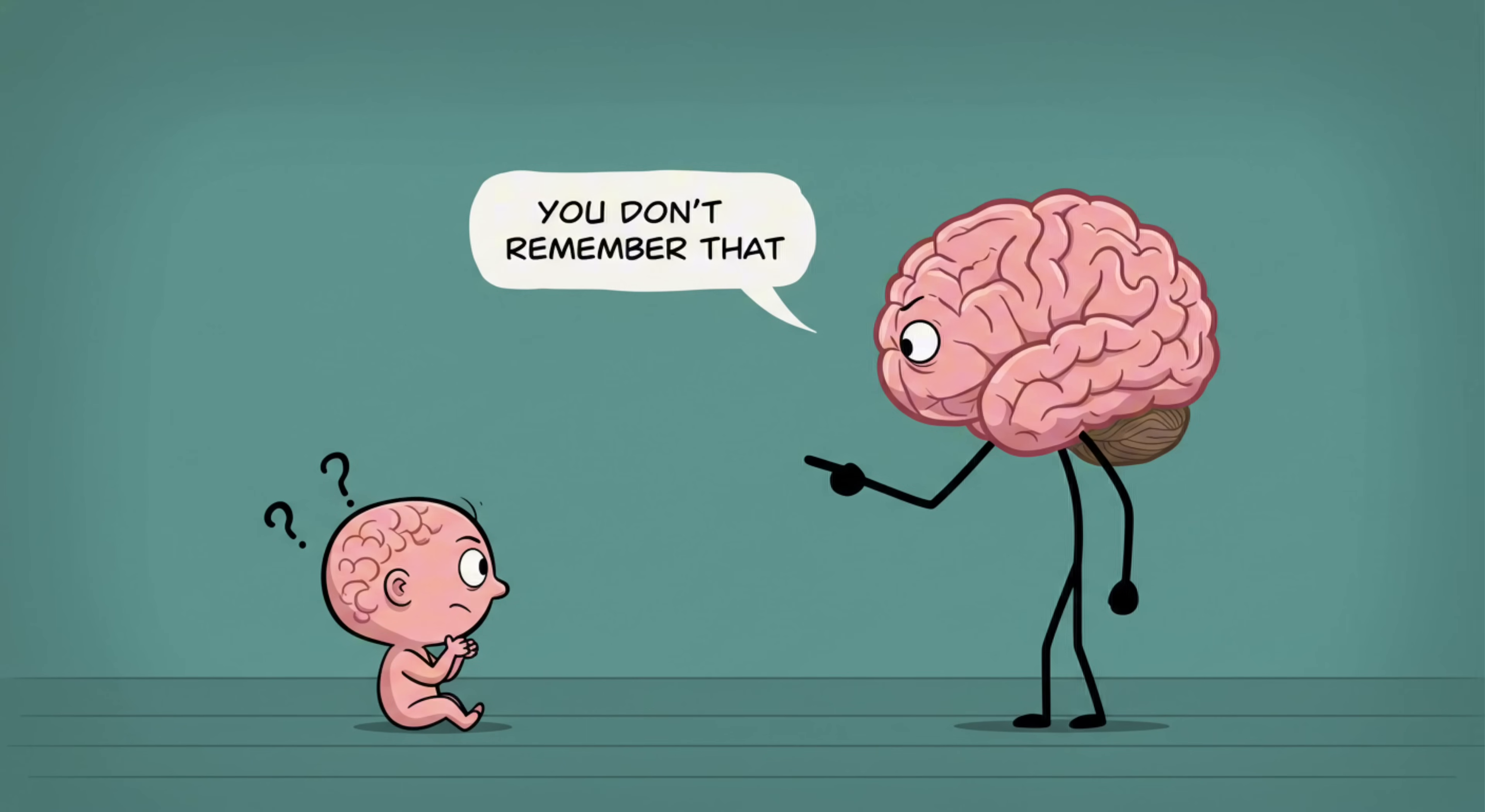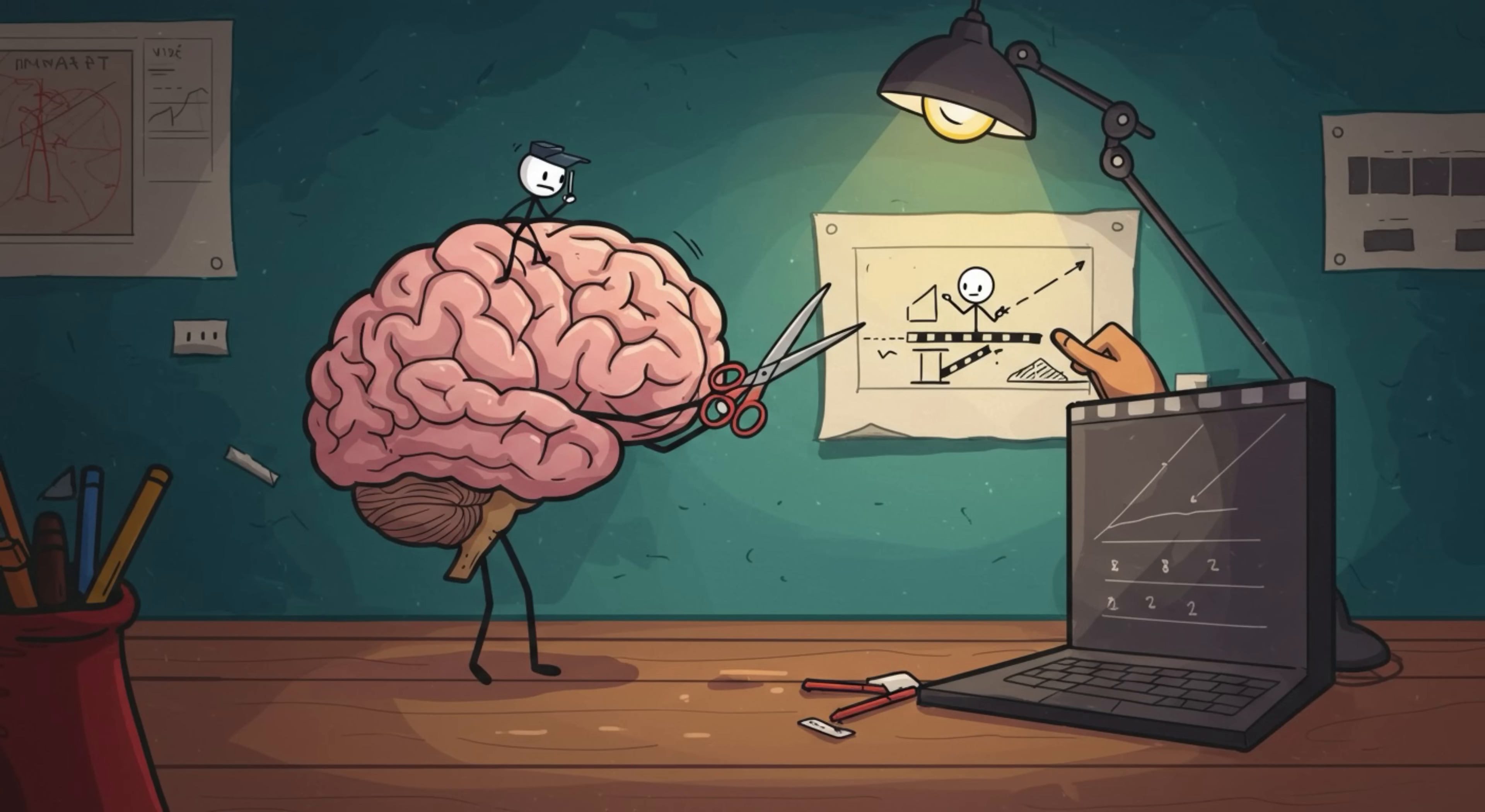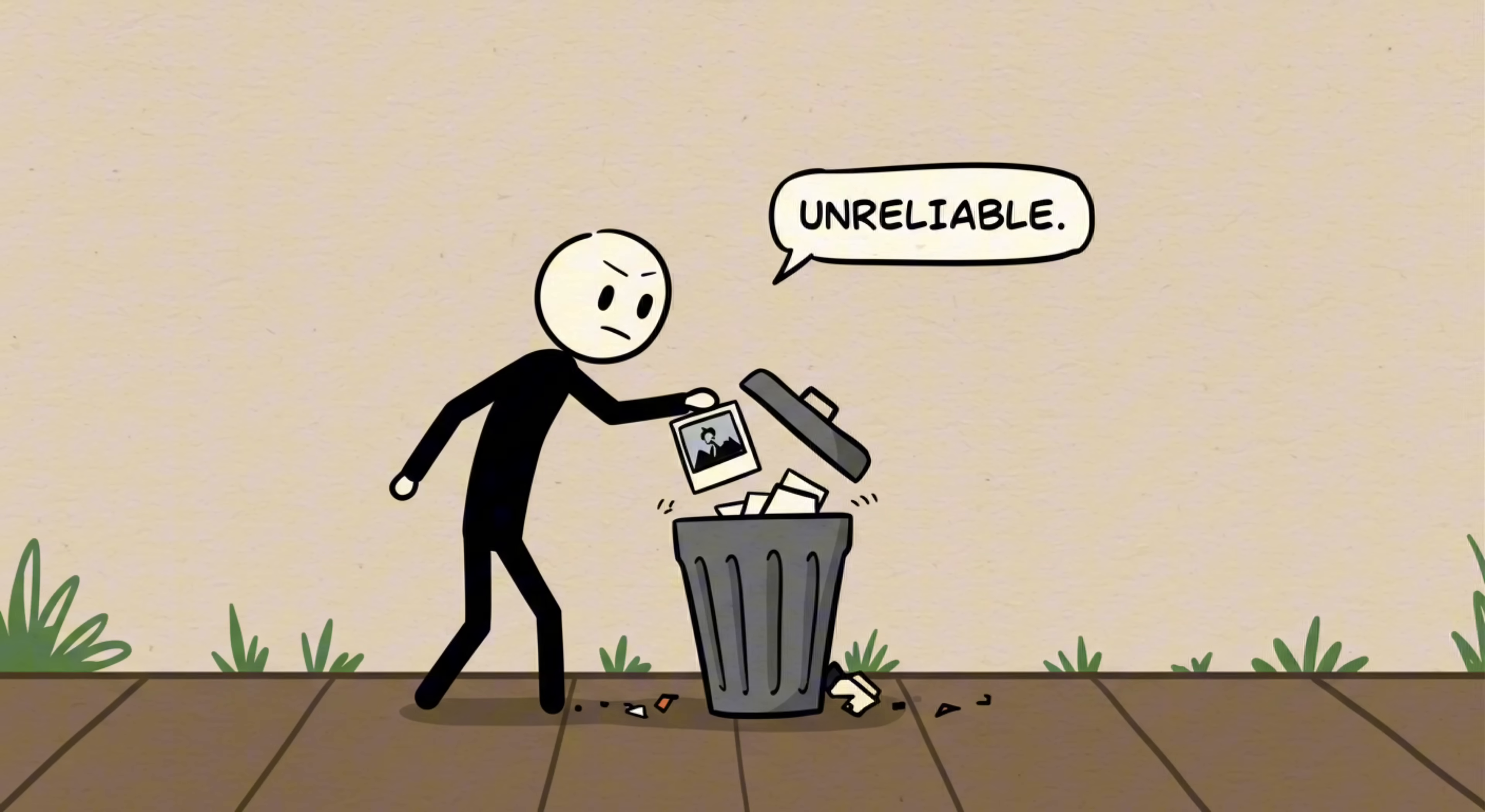1. Adult Brain Gaslighting. Okay, here's the wild part. You might actually have fragments of baby memories, but your grown-up brain refuses to believe them. As you get older, your mind gets better at editing memories to make them feel logical and consistent. Anything that doesn't match your adult perspective gets tossed out as unreliable.